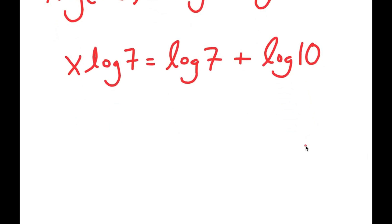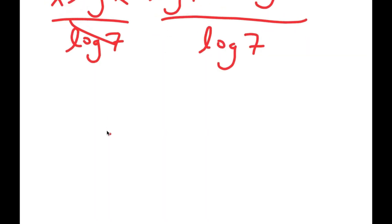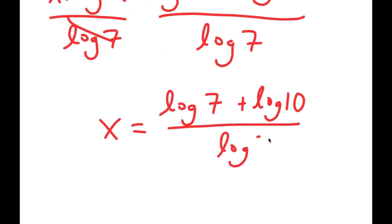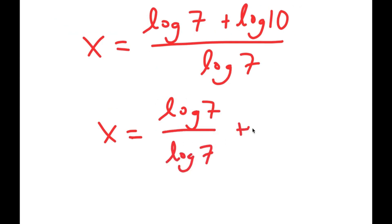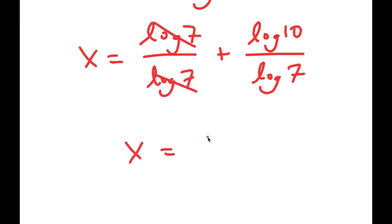From here, I'm going to divide both sides by log 7 to isolate x. These cancel out, and I get x is equal to (log 7 + log 10) over log 7. I can rewrite this as log 7 over log 7 plus log 10 over log 7.